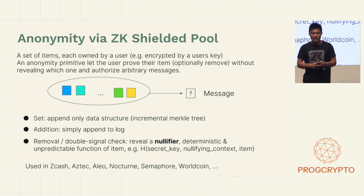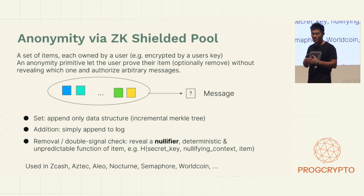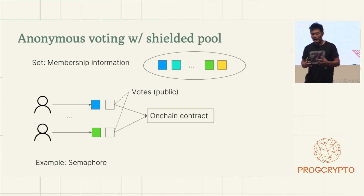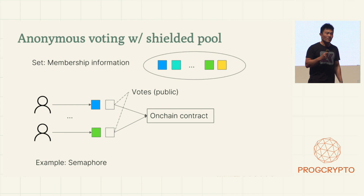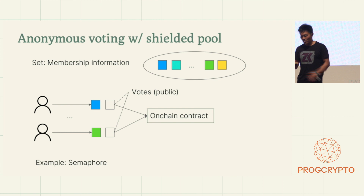This construction has been used extensively in privacy systems, including pretty much all privacy solutions on Ethereum — like Aztec, Nocturne — as well as private voting schemes such as Semaphore. For voting, the set is composed of users able to vote for a particular ballot. Users simply prove they have the ability to vote, that they are part of the set, and reveal a public vote, which is then publicly aggregated on-chain. In this way, you're not able to see which user voted for which outcome.